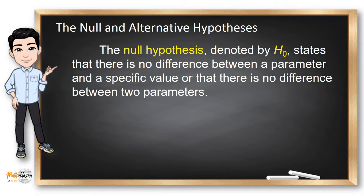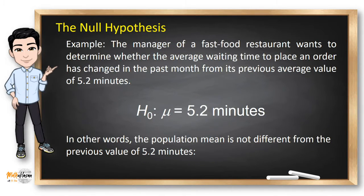There are two types of hypothesis: the null and alternative. The null hypothesis, denoted by H0, states that there is no difference between a parameter and a specific value, or that there is no difference between two parameters. In the previous example, the null hypothesis can be written as mu equals 5.2 minutes, where the Greek letter mu represents the population mean, because the null hypothesis states that there is no significant difference between the parameter and a specific value.